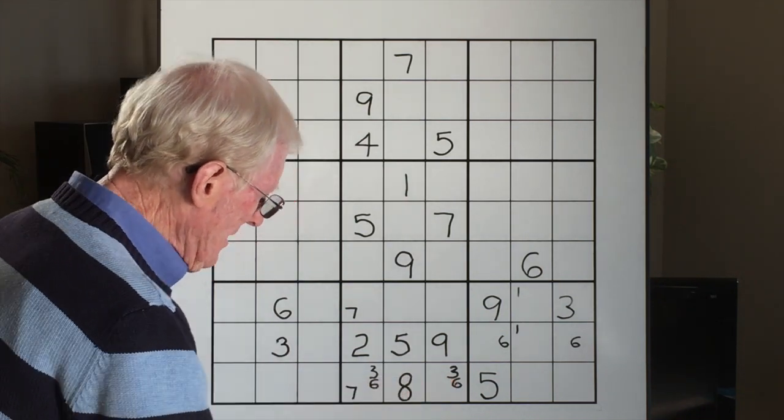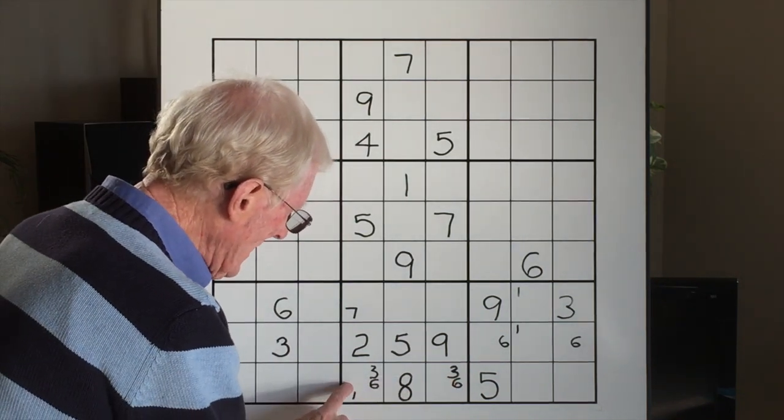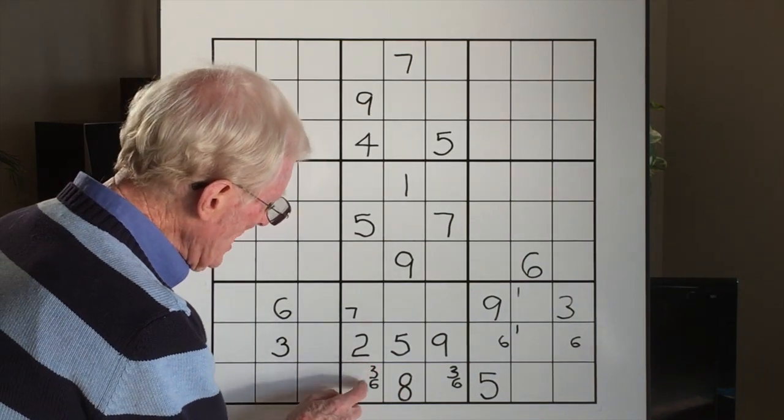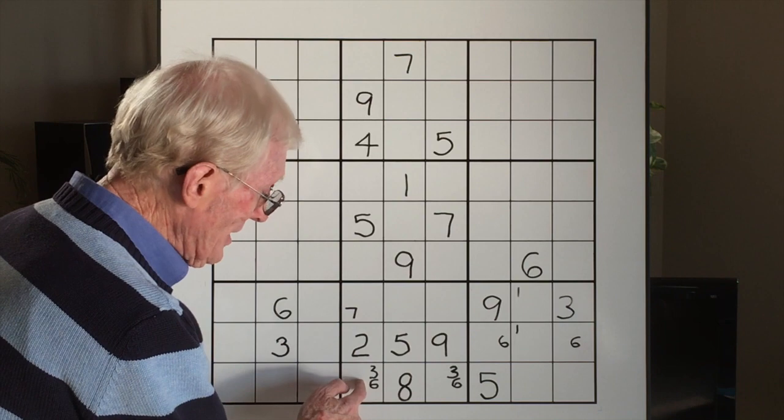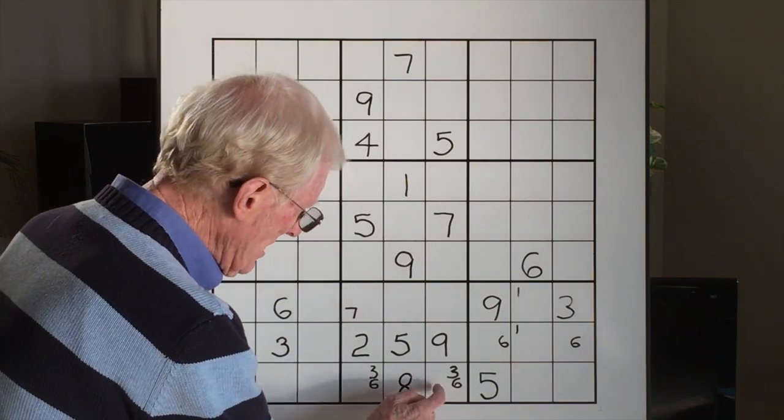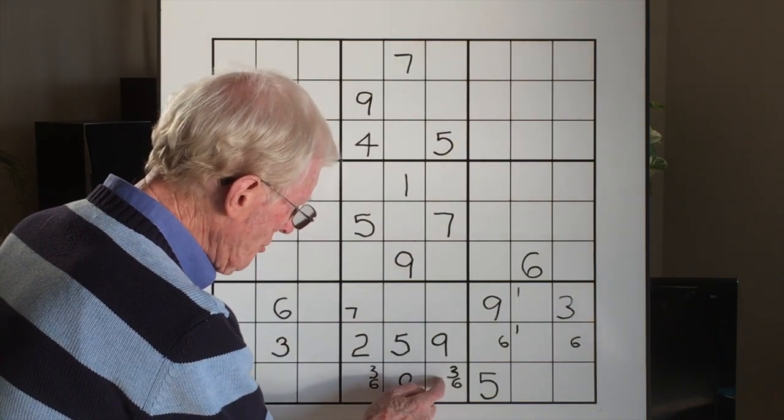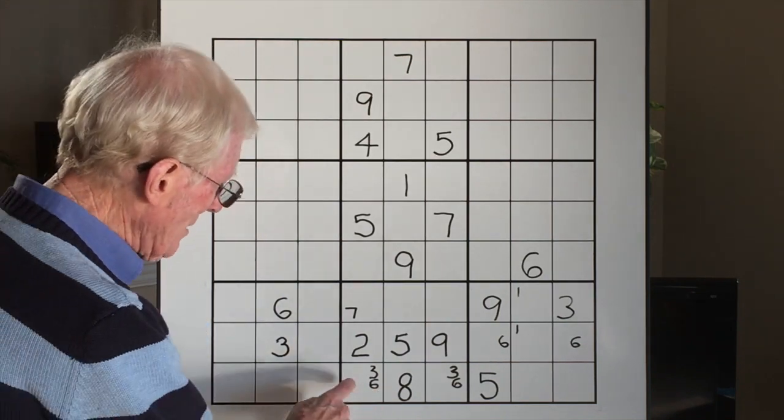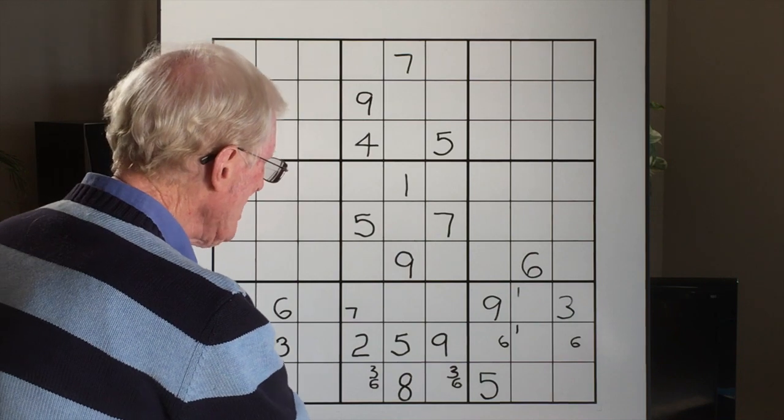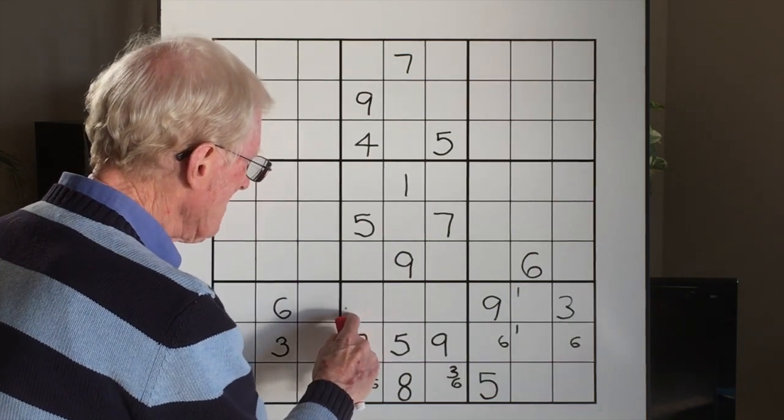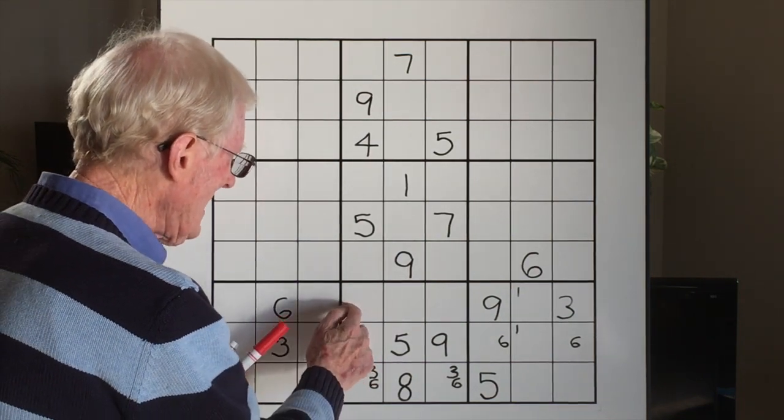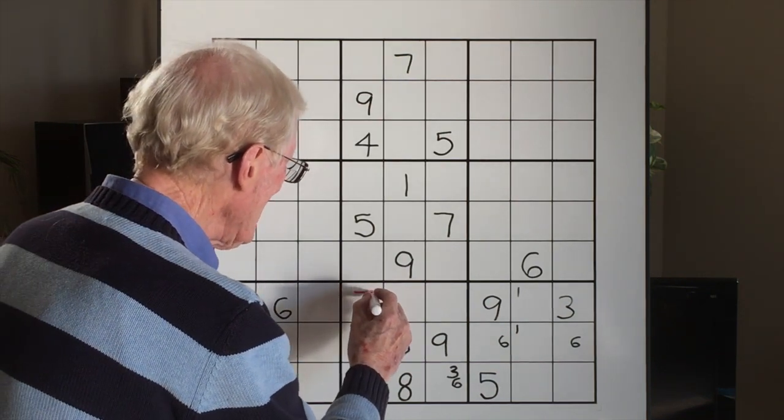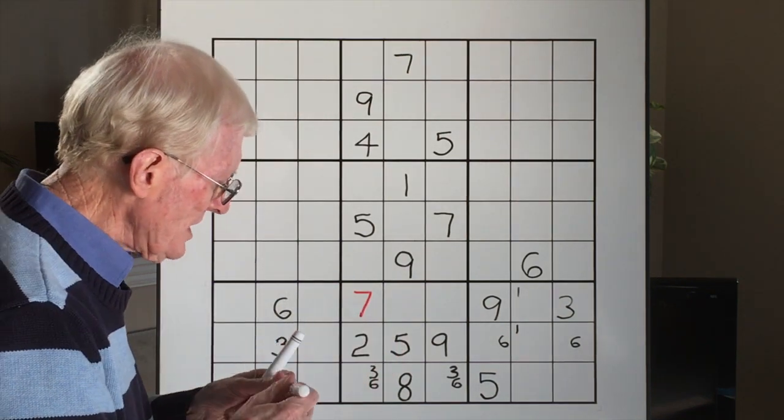If you've got a matching pair here, that means you cannot have that seven there, because a matching pair means that this cell is either a three or a six, and that cell is either a three or a six. That's it, no other little numbers can go there. Which means that you can get rid of that seven, and now this becomes the seven, a big seven. Isn't that neat to know? Straightforward, but it's handy to know.